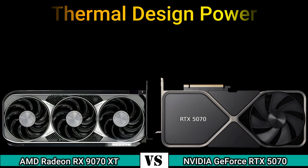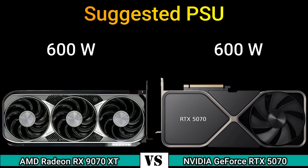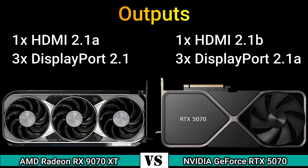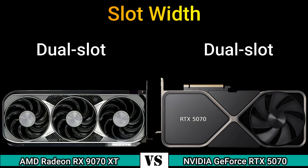Thermal design power: 260 W and 250 W. Suggested PSU: 600 W output. Display outputs: 1x HDMI 2.1 and 3x DisplayPort 2.1. Power connectors: 2x 8-pin and 1x 16-pin. Slot: dual slot.